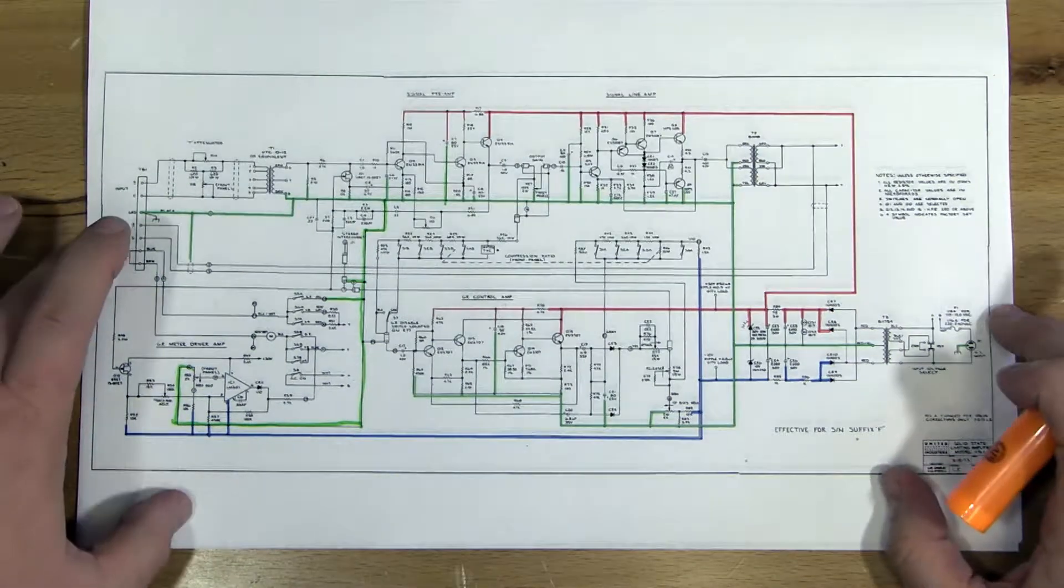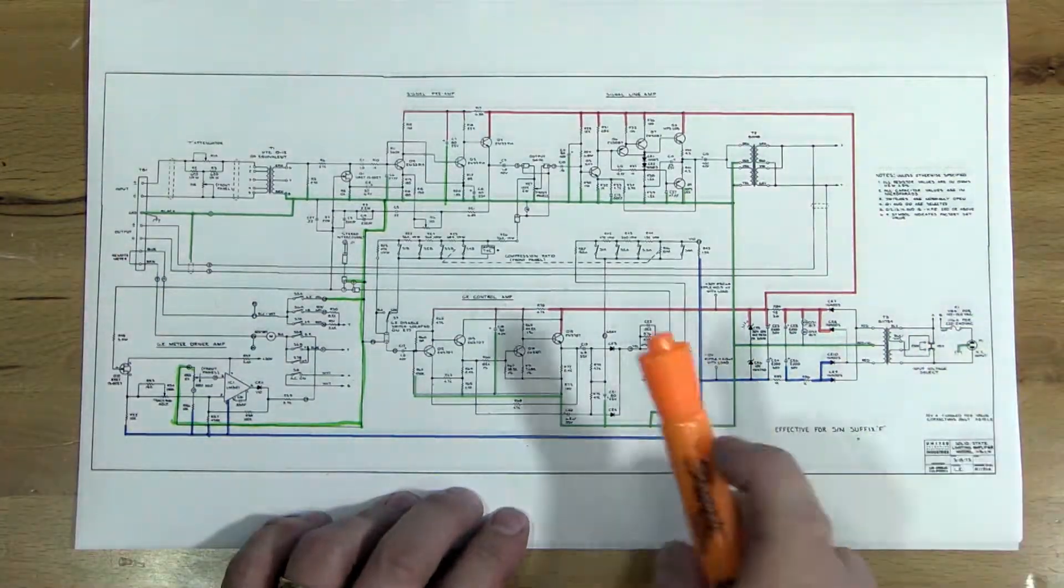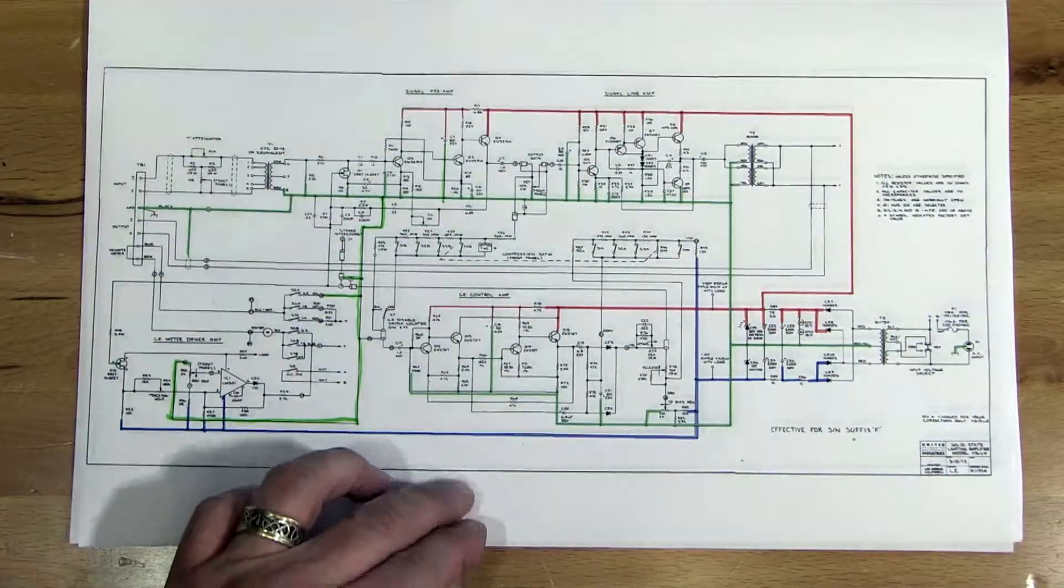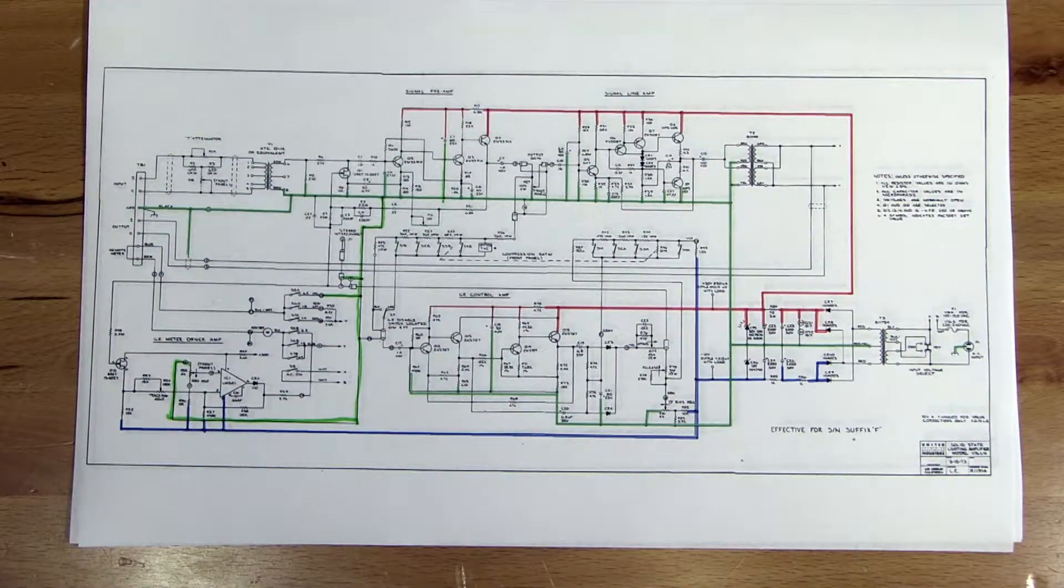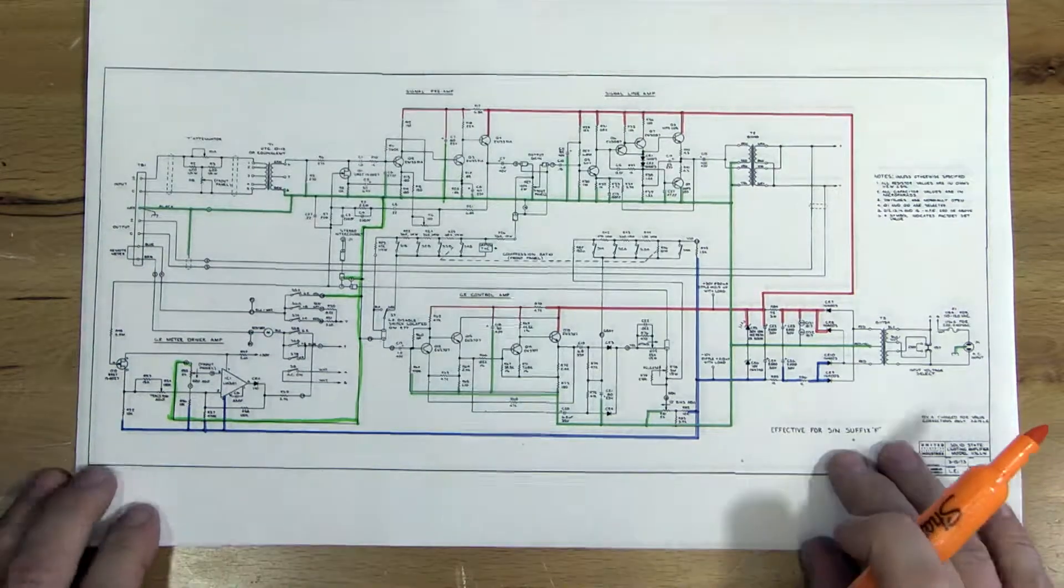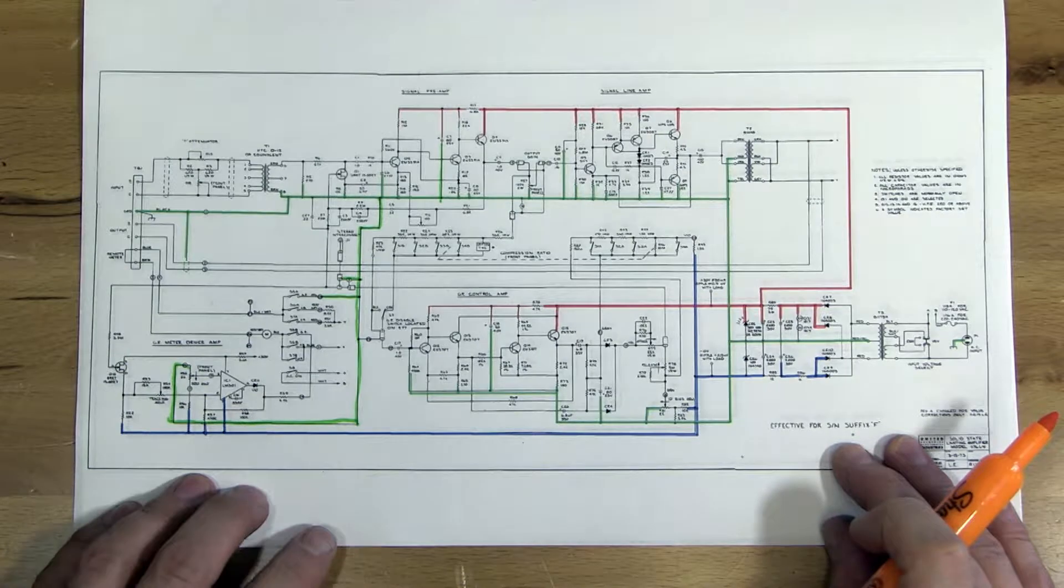So here I've got the full schematic of 1126. Instead of just looking at the small section we were earlier, I want to look at the whole thing for signal tracing. Hopefully it's not too small to see. There is a print copy you can download and print to follow along if you would like.